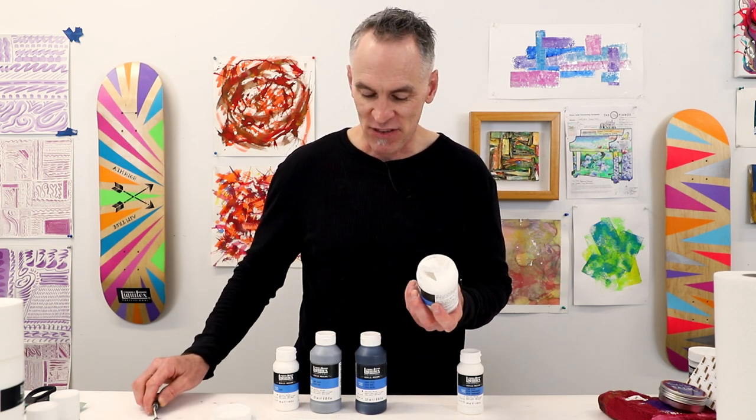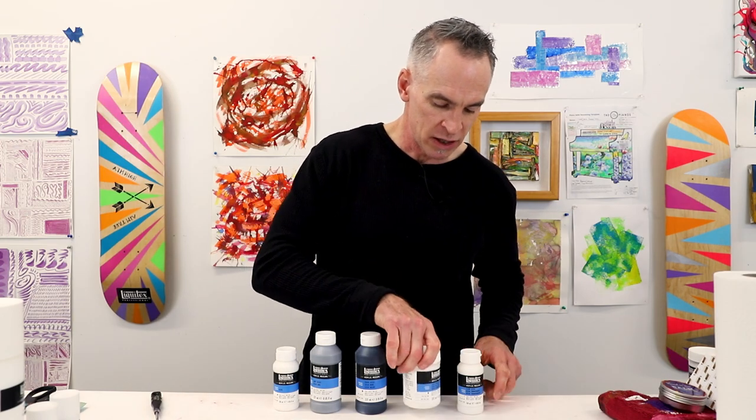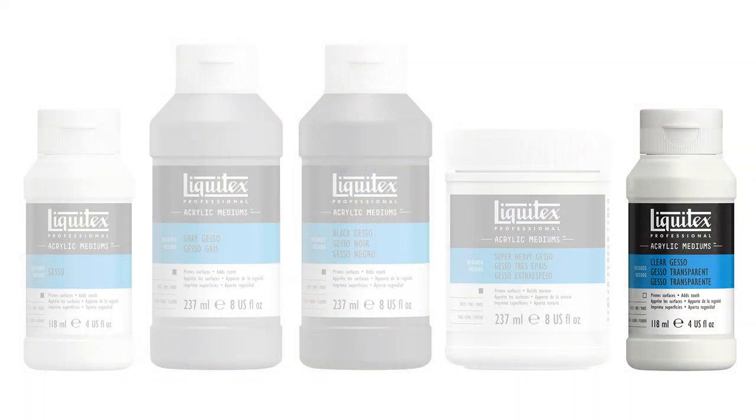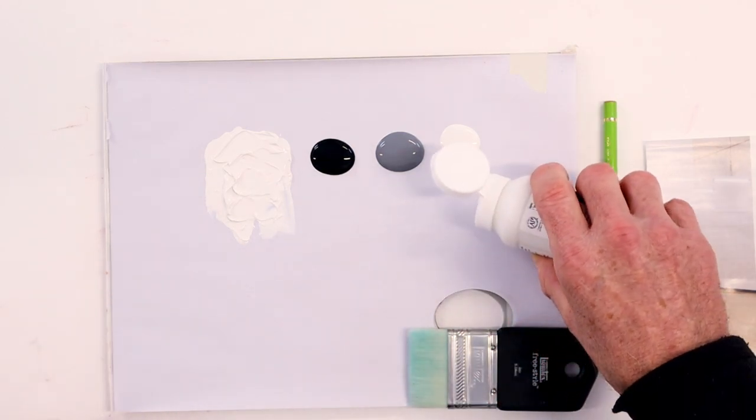But I think my favorite—and it's because sometimes I like to do mixed media collage work—is the clear gesso. This is important: it dries clear, but it doesn't look like it at first. It's a little tricky when people first put it out. Sometimes they think they've got the wrong product.